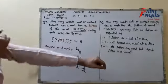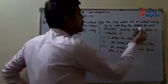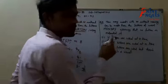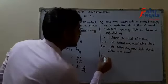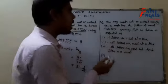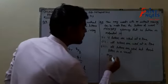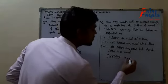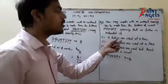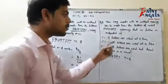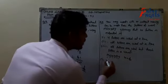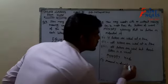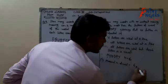Now look at question number 9: how many words with or without meaning can be made from the letters of the word MONDAY, assuming no letter is repeated? The first part is that 4 letters are used at a time. In the word MONDAY there are total 6 letters, so N = 6. We have to make 4-letter words, so we arrange 4 letters at a time. The required number of words = 6P4.